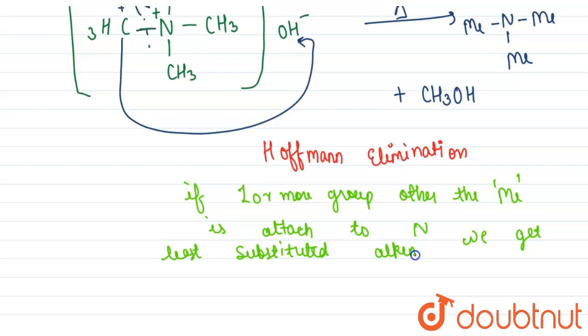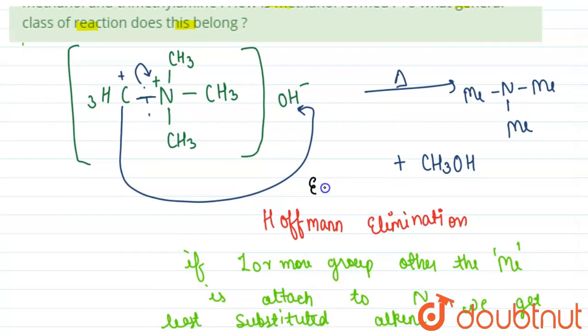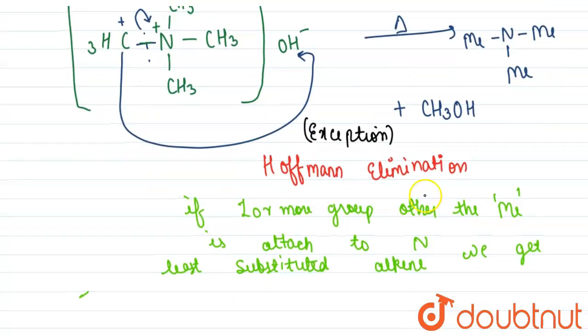alkene. Hence this example is an exception of Hoffman elimination where instead of alkenes - in Hoffman elimination always an alkene is formed - this is the only exception where we get methanol.